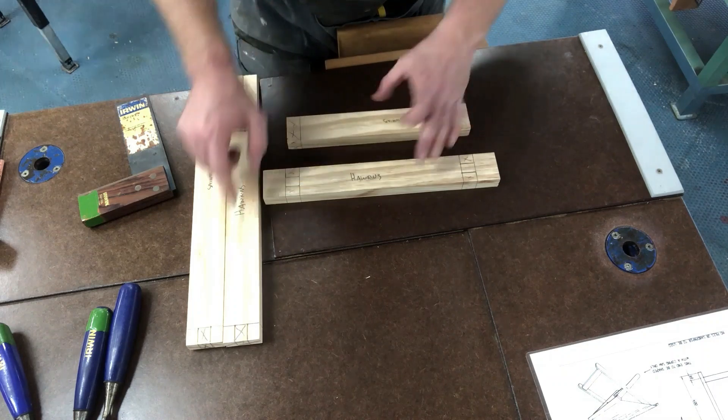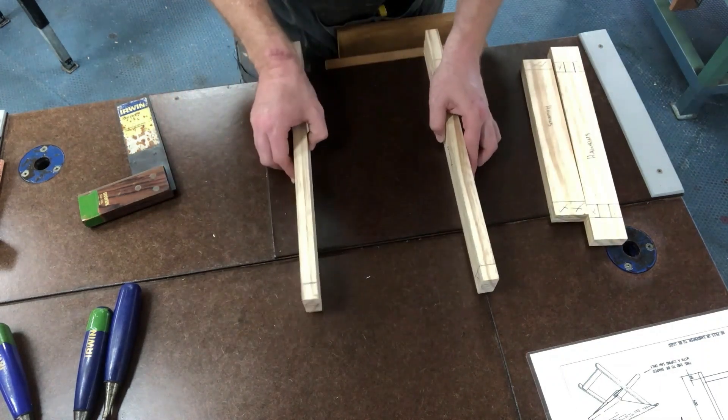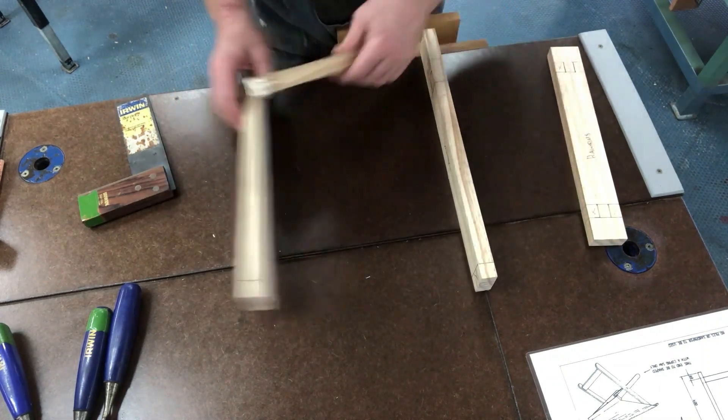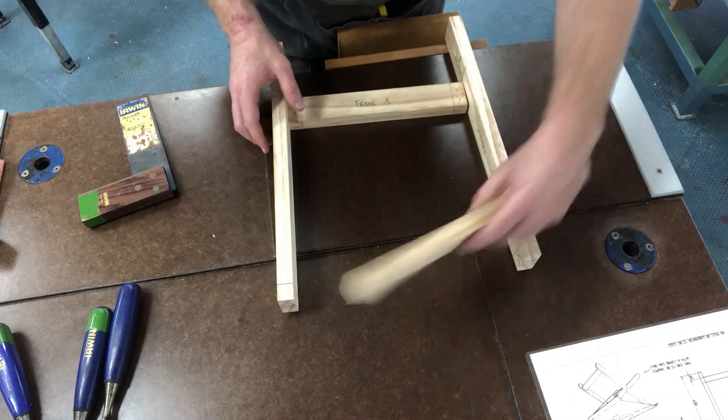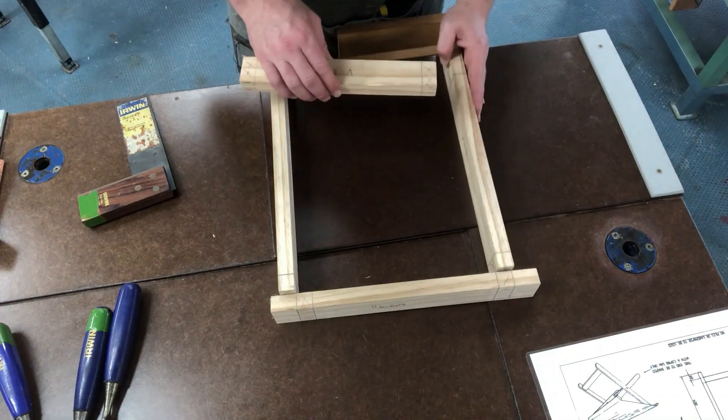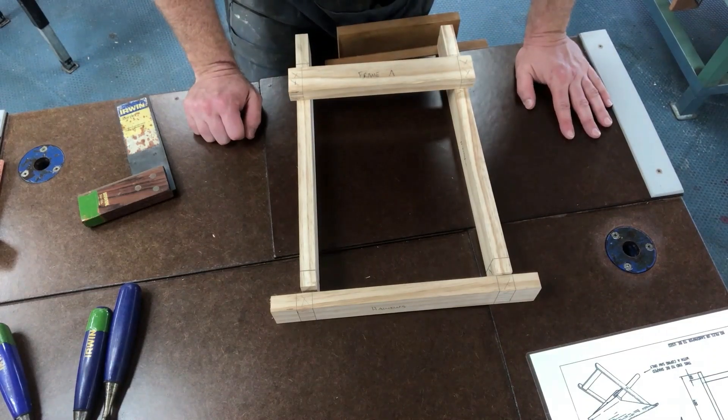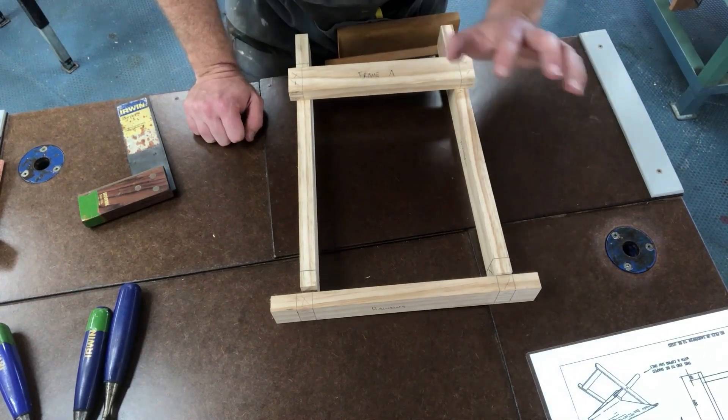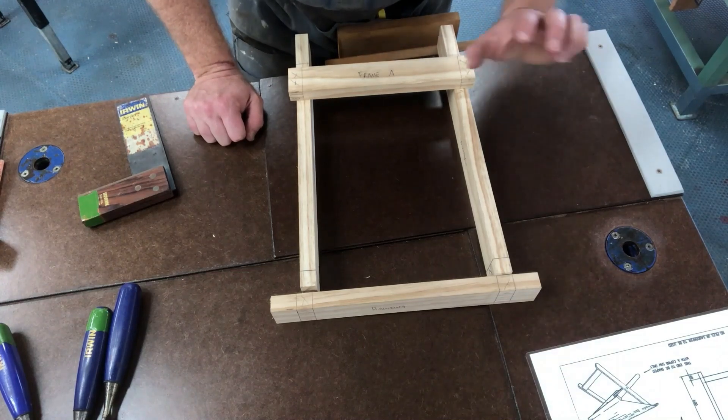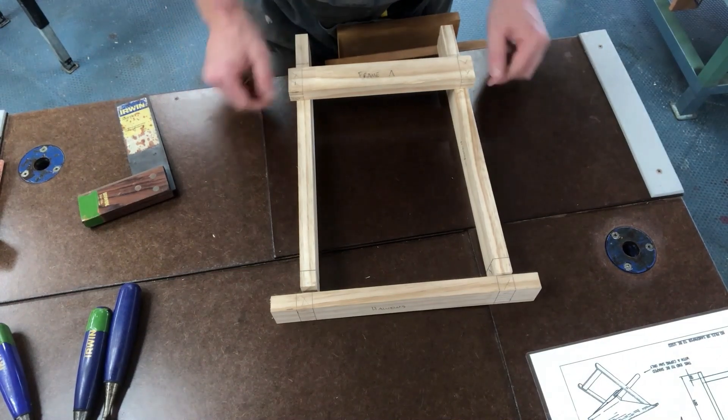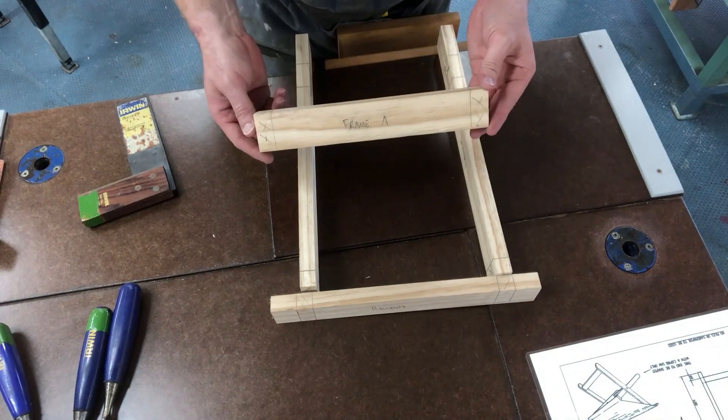Also check with your top seat and the rail - just make sure that your lines all match up there. These will be fitting in down the bottom, so it goes like so. That one goes in there and there. The next thing you will be doing is doing the exact same thing for frame B. Just a couple of measurements are different for this middle rail, that bottom rail there.